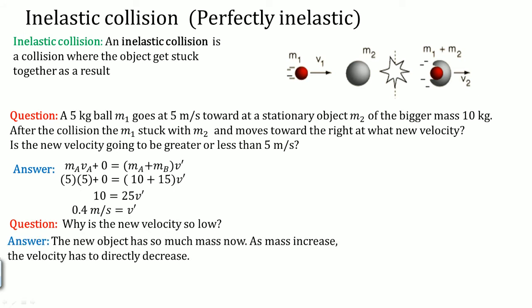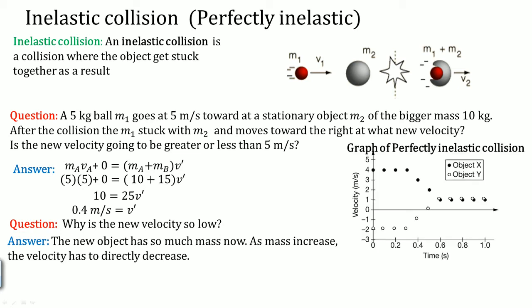The new object has so much mass. As mass increases, velocity must directly decrease. Looking at the graph, the objects' velocities come to be the same — this is when they have the same velocity because the mass is now combined.